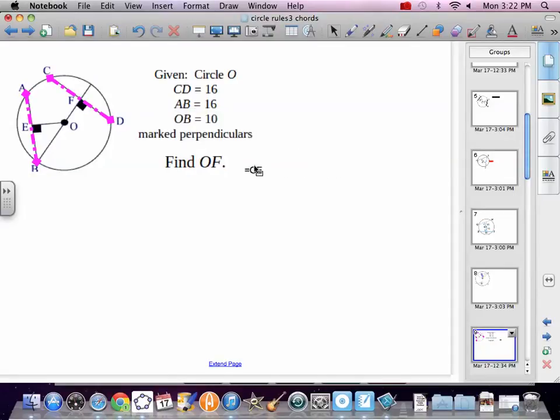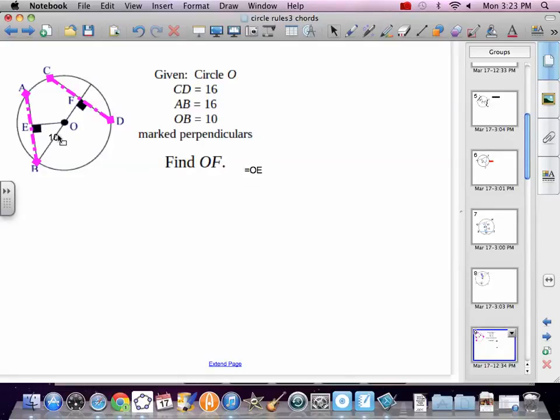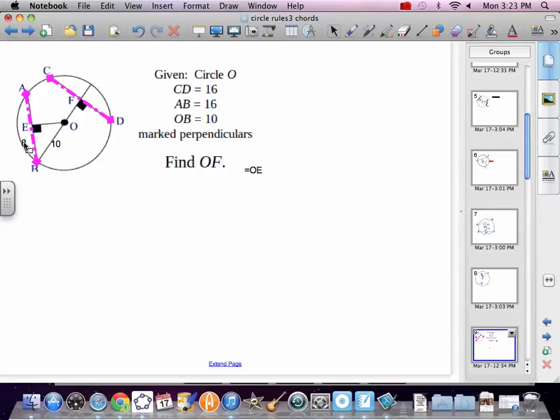All right. Well I know this is 16. I know OB is 10. So they're telling me that's 10. Oh that's B there. It got cut off. It looks like an R, but it was B. And if this is 16, remember things are getting cut in half. We're bisecting things. So that's going to be an 8. So now we've got a right triangle that goes OE, EB, B to O. And it's an 8, an x, and a 10.